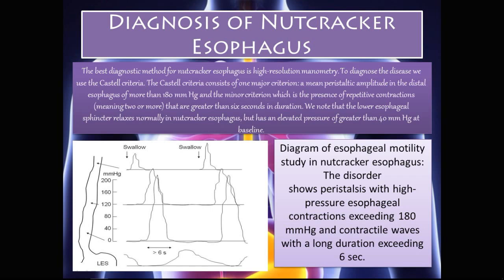Manometry measures the pressure within the esophagus. With these spasms occurring, there is an increase in pressure in the esophageal body. Manometry demonstrates these pressure peaks, with the major criteria being an average amplitude in the distal esophagus of more than 180 mmHg, and the minor criteria consisting of repetitive contractions of two or more, each greater than six seconds in duration. The picture on the left shows high-pressure contractions exceeding 180 mmHg and long-duration contractile waves exceeding six seconds, confirming a positive diagnosis.